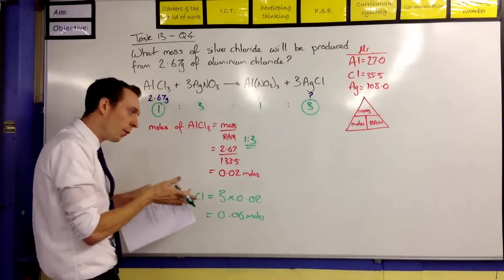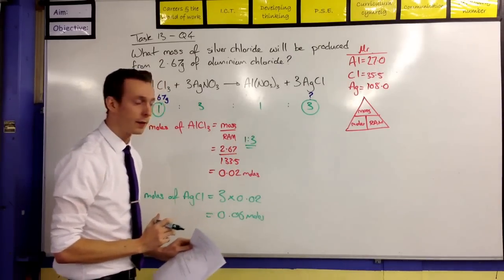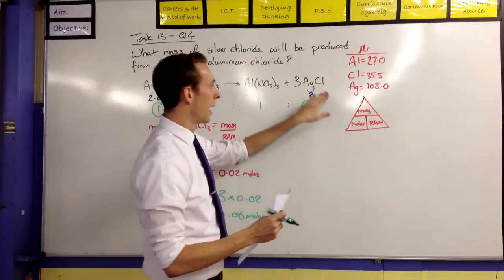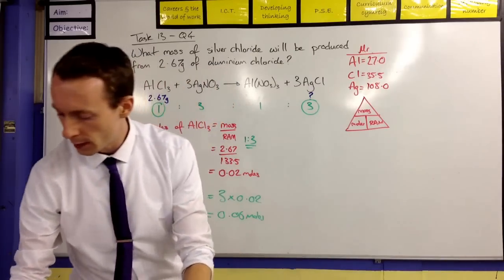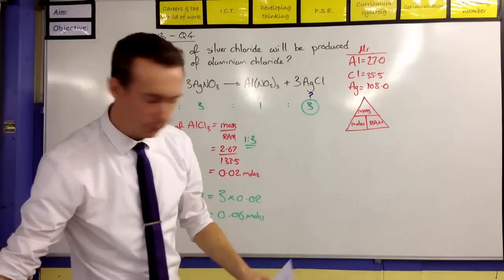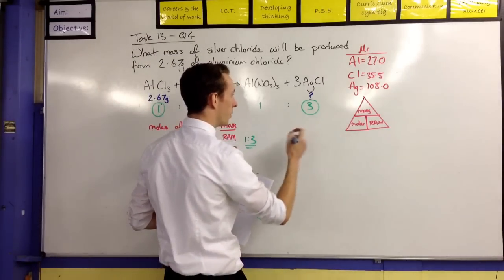So I know now from this that I've got 0.06 moles of that. So it's kind of the second point. We've formed a bridge now where we're going over to the other side. So we know how many moles we have of this. We can work out its relative atomic mass. And so we can work out what its mass is. So that's going to be the final thing we're going to do. We've bridged over.